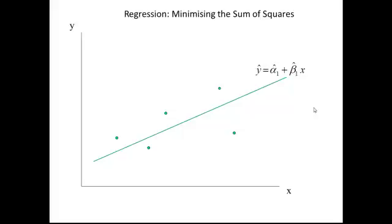What we can do is introduce the squares associated with each of the observations. For the first observation, you take the distance to the line, square it, and then the size of the square is represented by the area of the square shown here.